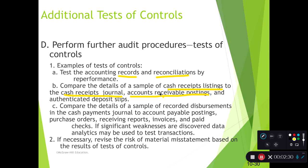We can also verify that listing against the postings to the subsidiary ledger of accounts receivable. If customers are paying off their accounts receivable, we should see a reconciling posting to the subsidiary ledger. We can also look at recorded disbursements in the cash payments journal and trace them forward to the subsidiary ledger for accounts payable.